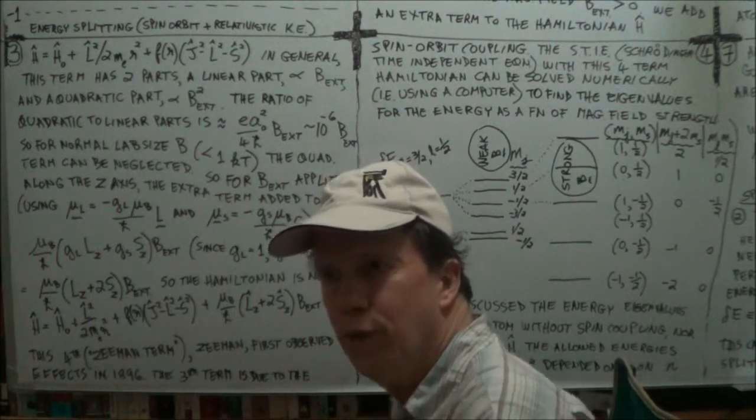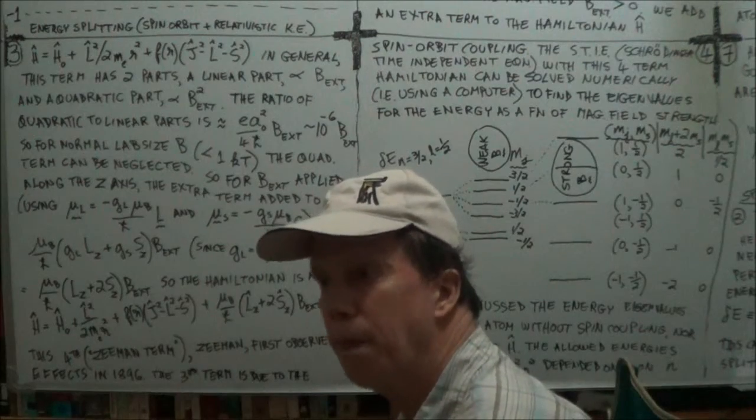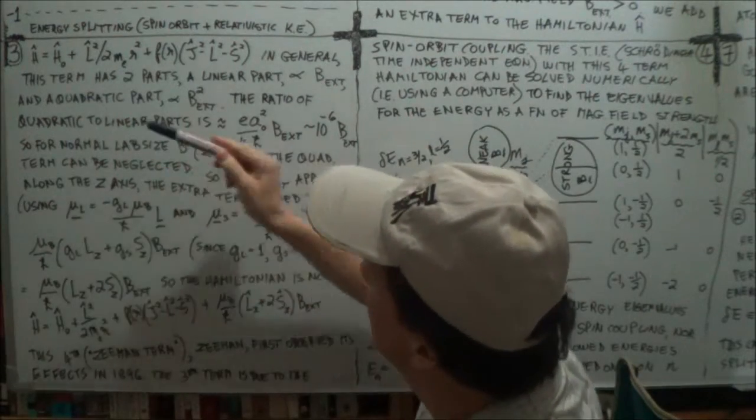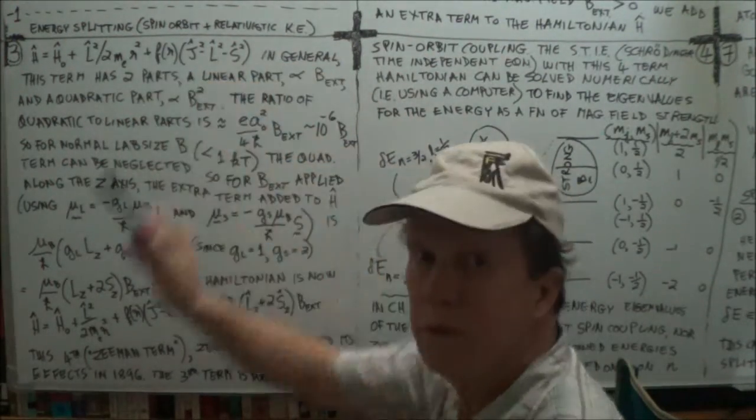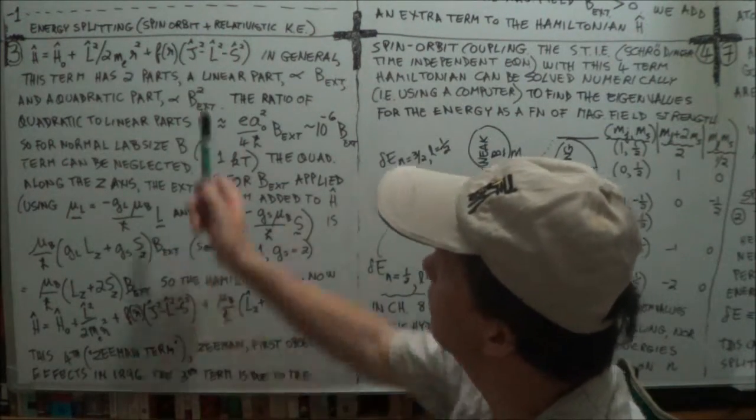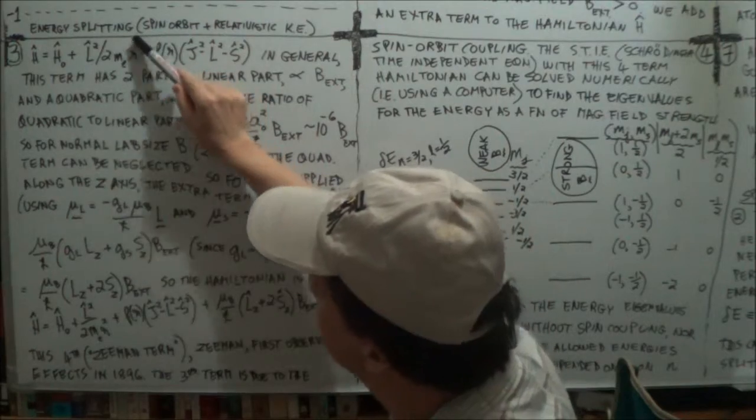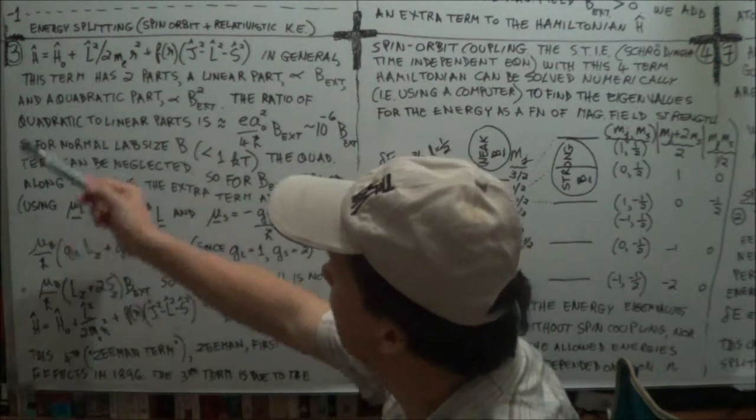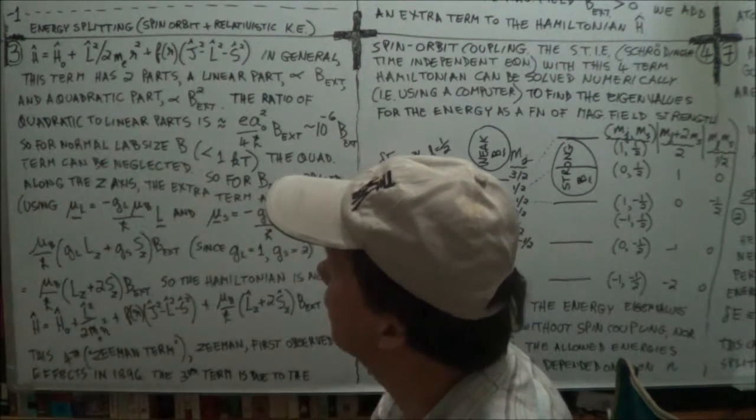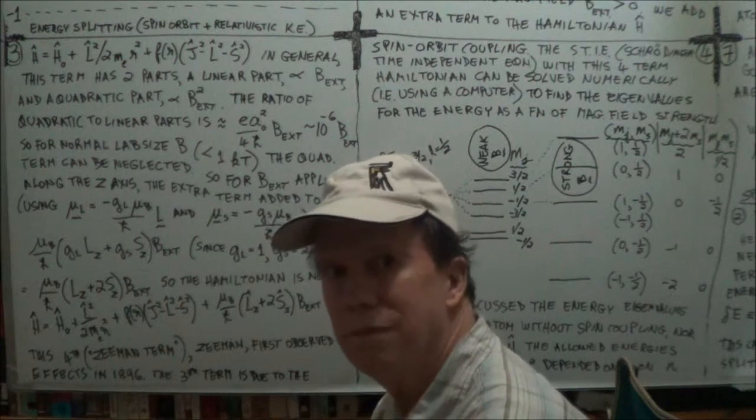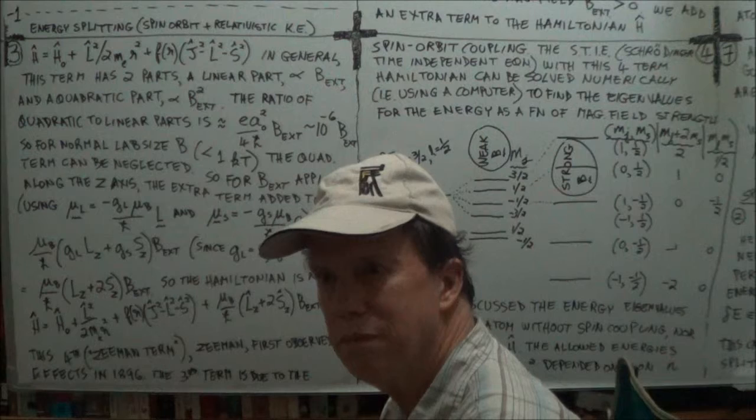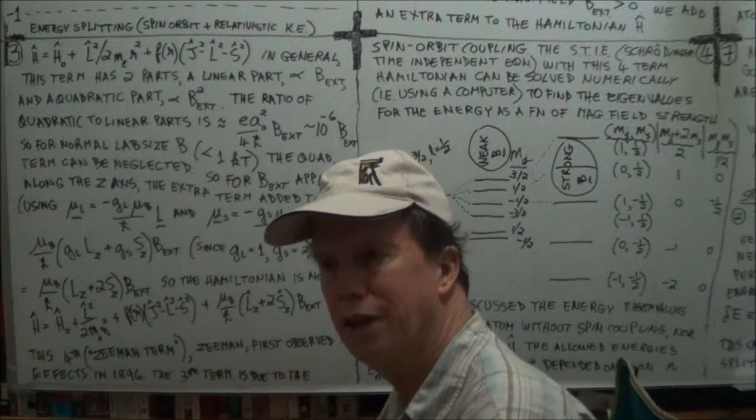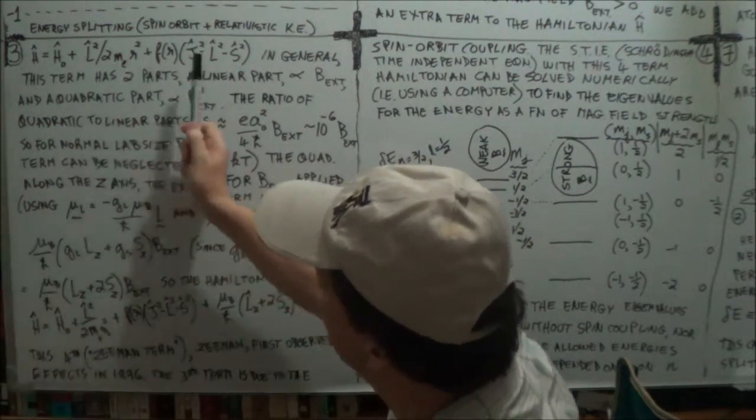The Hamiltonian we had before with the spin-orbit coupling was the following, so we had three terms in it. This is the spin-orbit coupling that we've dealt with in earlier sessions, so effectively three terms. This term here for angular momentum and this is the basic term for a very simple symmetric atom.